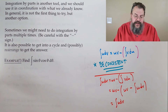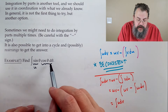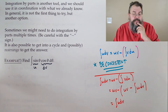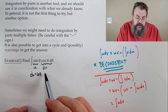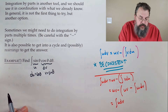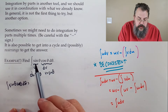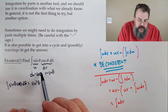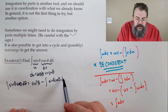Let's do a quick example: the integral of sin θ · cos θ dθ. Call sin θ our u, and cos θ dθ our dv. Then du = cos θ dθ, and v = sin θ. Applying the formula: the integral of sin θ cos θ dθ equals sin²θ minus the integral of sin θ cos θ dθ.